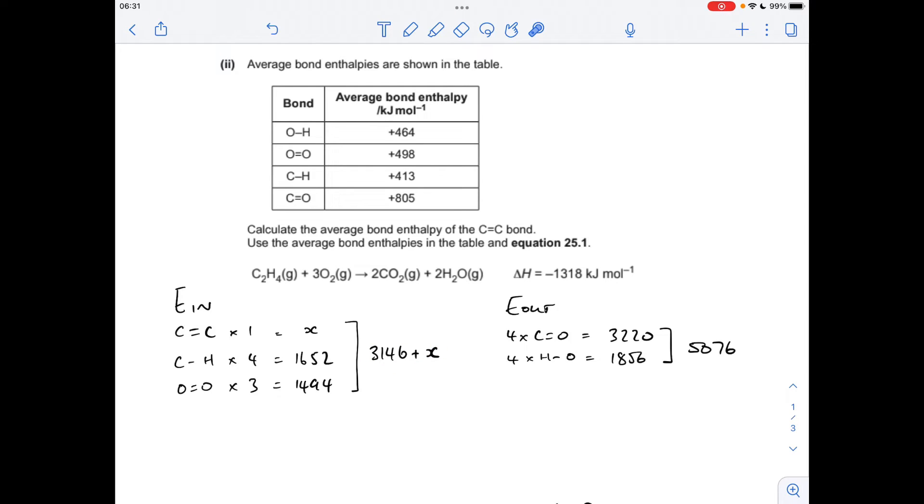Energy out, we've got four moles of C=O double bonds being formed. There's two moles in every CO2 molecule, so that's 3220. Again, four moles of O-H bonds, because we're making two moles of H2O, and there's two moles of bonds in each H2O. Four, 1856, so that's a total of 5076.